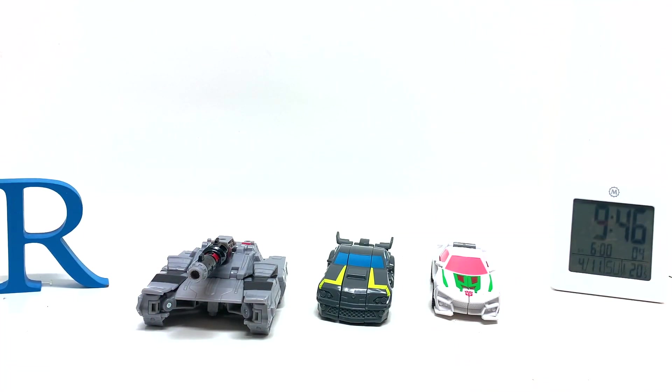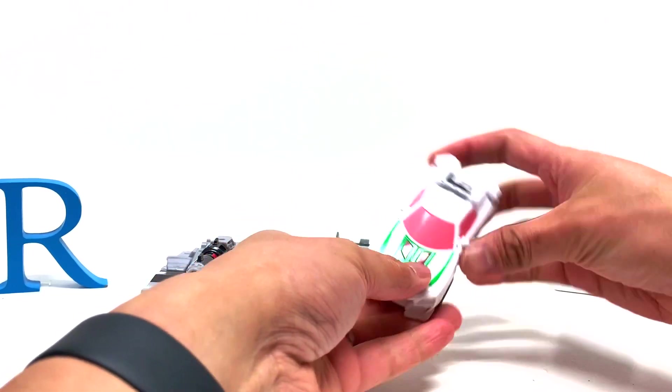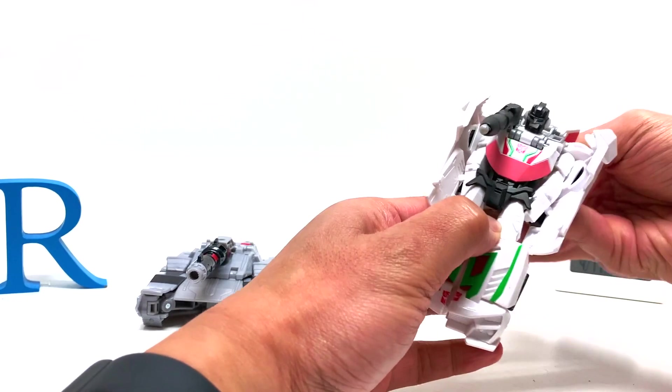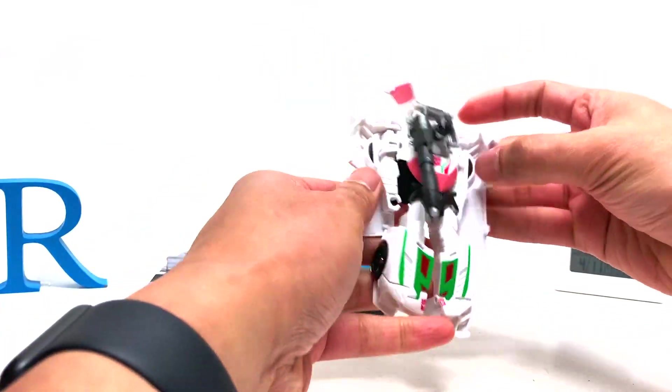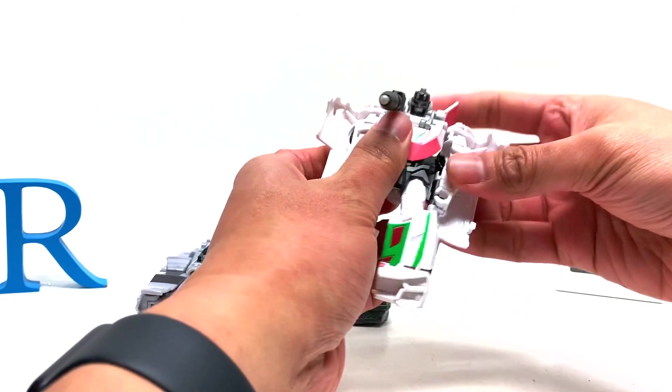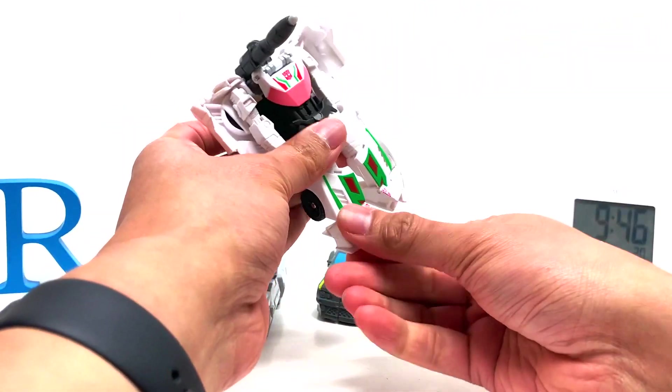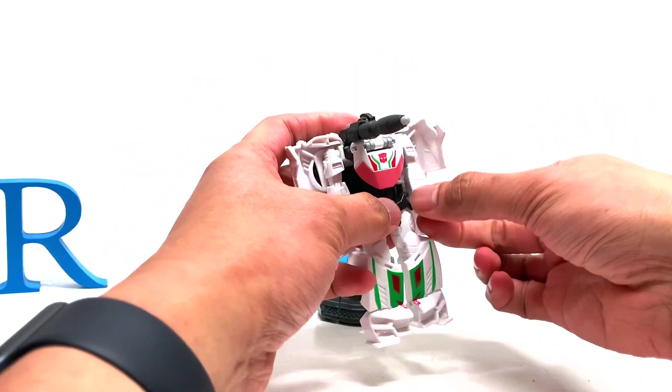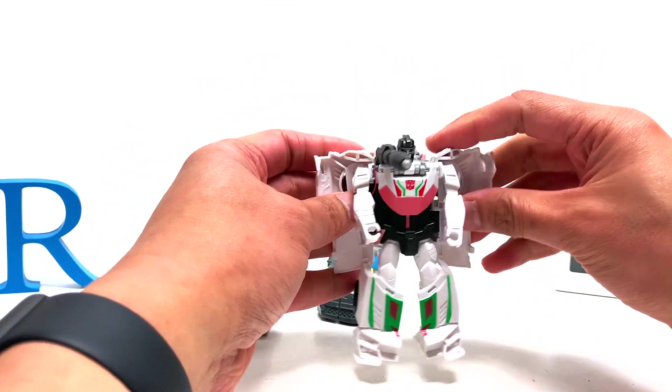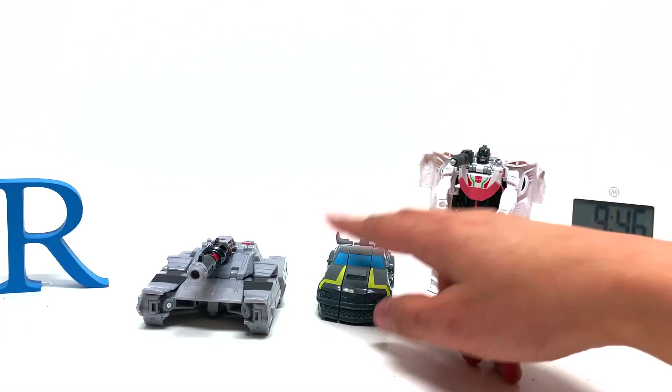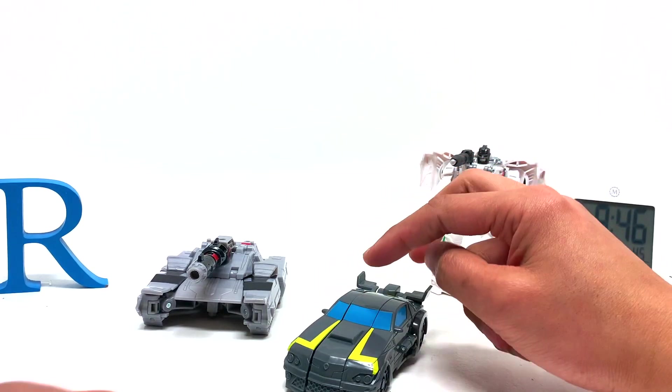Let's now transform them all back into their robot modes. Pull this over and back all the way back. Pull this out as well, all the way back, and it should kind of hook into place. Pull these out and it will snap into place. Pull out the forearms. That's not a bad Wheel Jack, except for the head. It doesn't even look like the head on the packaging.